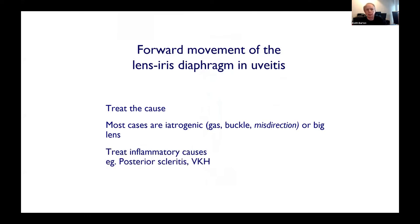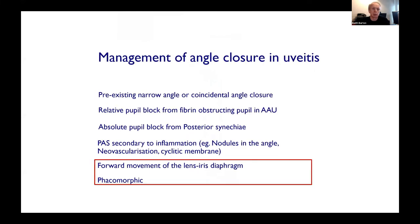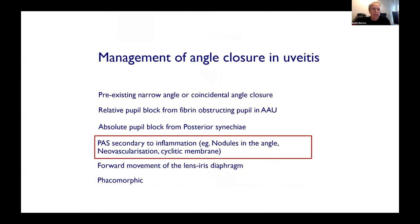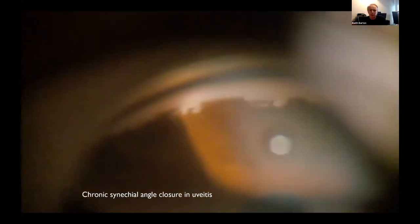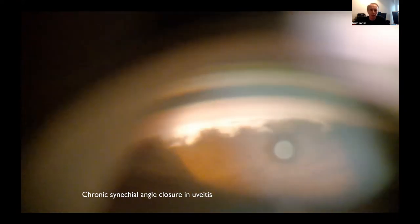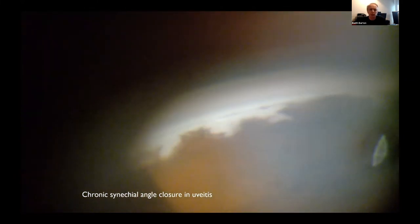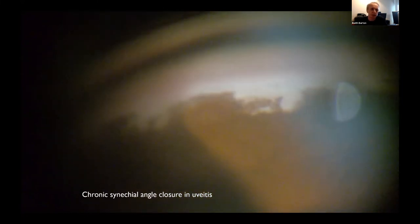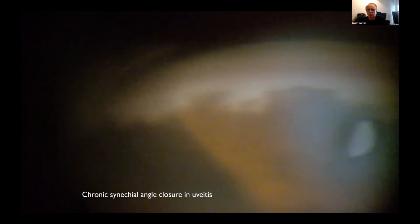For forward movement you've got to treat the cause — most cases are tractogenic, but you've got to treat inflammatory causes. Secondary angle closure from chronic synechiae is really a prognostic sign — it tells you that in a patient with episodic IOP elevation, it's not going to go away and you need to do something surgically. I use the appearance of the angle and the disc as prognosticators rather than waiting for visual field defects.